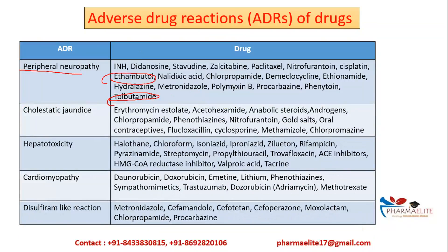Ethambutol is an anti-tuberculosis drug, isoniazid is a different category, didanosine is another. Stavudine is antiviral, paclitaxel is anti-cancer, procarbazine is anti-cancer, phenytoin is another category, and cisplatin is anti-cancer. To help remember: a good number of anti-cancer drugs cause peripheral neuropathy, plus one anti-diabetic, one anti-tubercular, and a few antivirals. If you can't memorize each drug, try going by category.